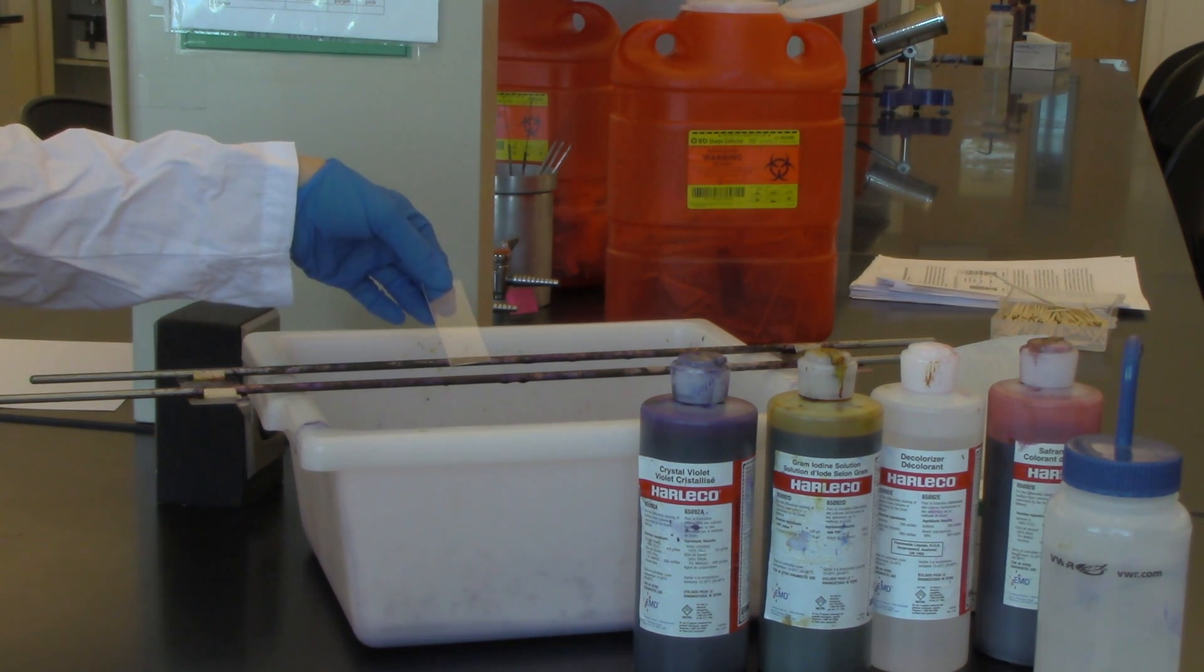This is the differential stain, the gram stain process. Differential stains are unique from simple stains in that they use at least two dyes, two different stains, and you're trying to distinguish between different cell structures.